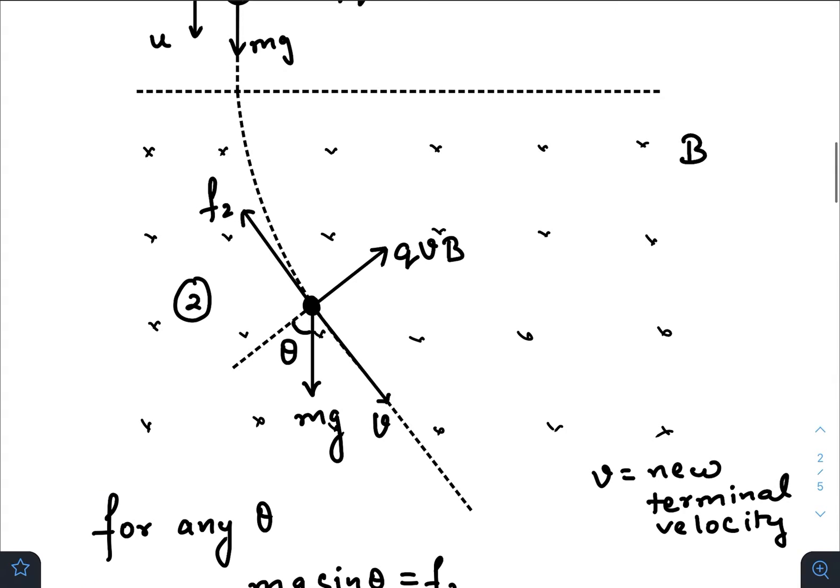And after some time the ball approaches a new terminal velocity. So when the ball approaches its new terminal velocity, the free body diagram would look something like this.